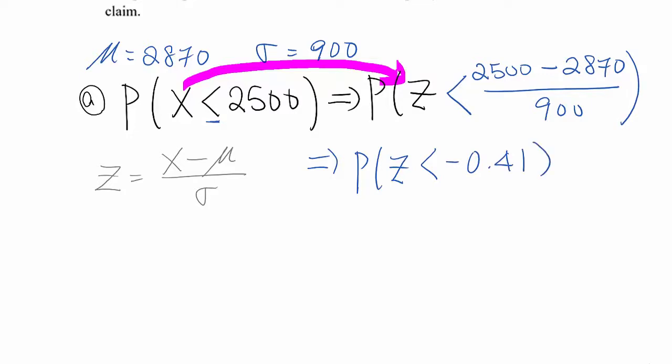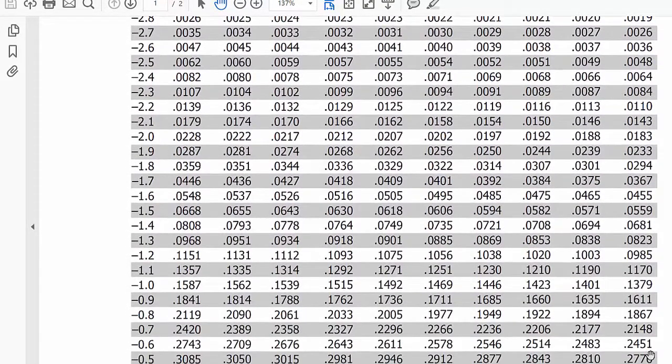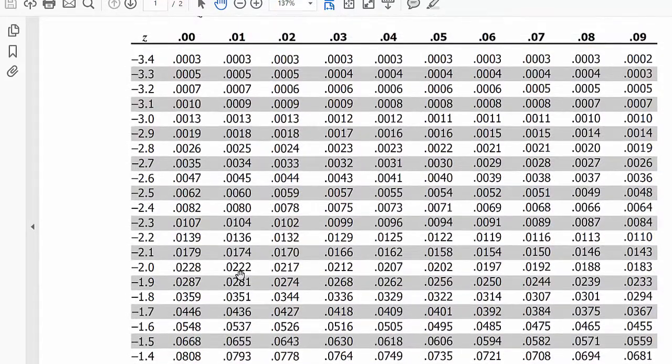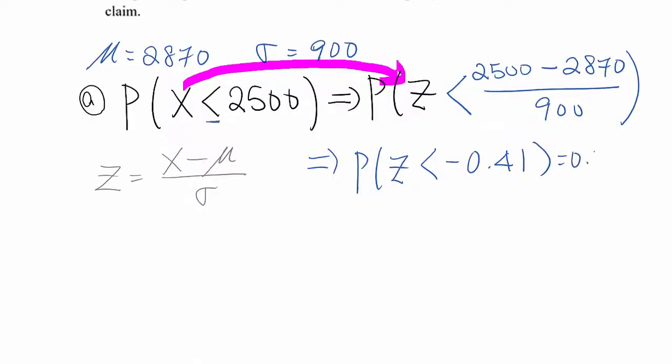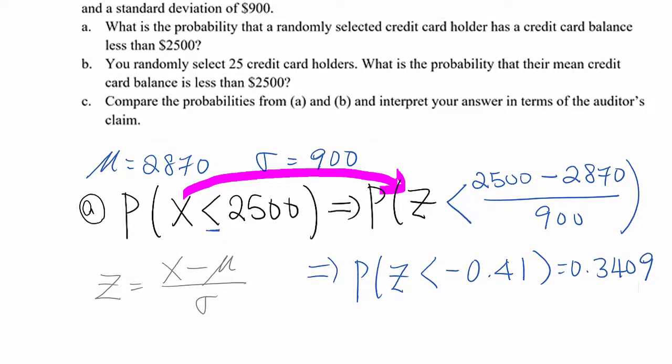you will get probability Z is less than negative 0.41. So, just go to Z-table. Negative 0.41 which is right here, which is 0.3409. So, that based on this analysis, A answered. So, 34.09%, maybe people have credit card balance less than $2500. Then, think about B here.